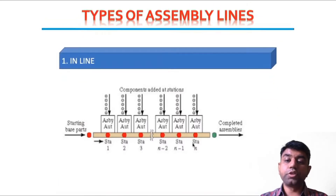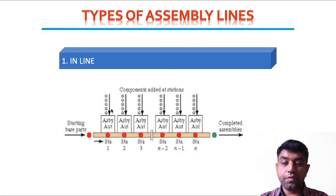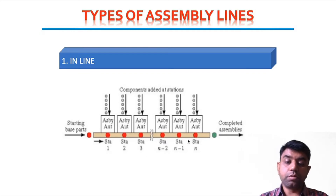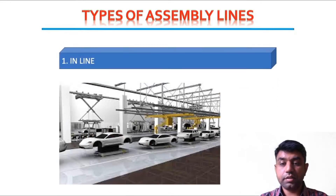There are different types of arrangements of machinery, giving us different classifications. The first is the inline type, where machines or robots are arranged in a linear way. One component arrives at the starting point, and at each assembly unit a different component is added — it moves to the second machine, which attaches a third component, and so on. The best example of inline arrangement is the automobile industry.